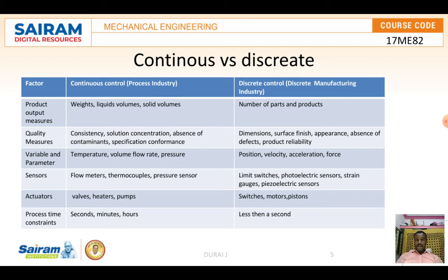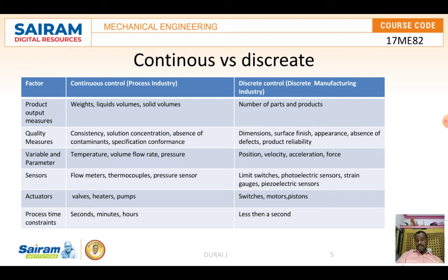For variables and parameters, continuous control uses temperature, volume, flow rate, and pressure — these are the major parameters in process industries. Discrete control uses position, velocity, acceleration, and force. For sensors, continuous control uses flow meters, thermocouples, and pressure sensors. Thermocouples measure temperature and pressure sensors measure pressure. In discrete control, sensors include limit switches, photoelectric sensors, strain gauges, and piezoelectric sensors.